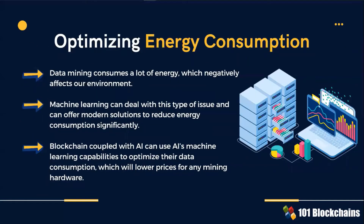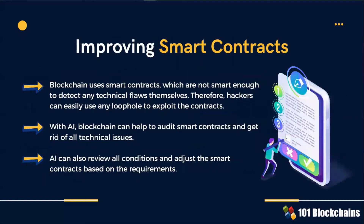Blockchain, coupled with AI, can use AI's machine learning capabilities to optimize data consumption. AI can also be used to audit smart contracts and remove or repair technical issues, as well as review smart contract conditions and adjust the smart contracts accordingly.